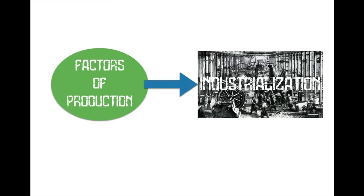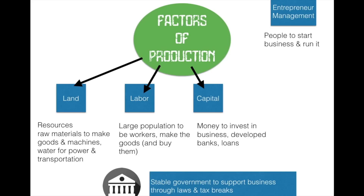Without the factors of production there is no industrialization. The big three are land, labor, and capital. Land refers to your resources and raw materials needed to produce goods, build machines, and build factories — including water for power and transportation. If your country does not have the right resources, it's not going to industrialize. The next factor is labor: you need a large population of workers and consumers.